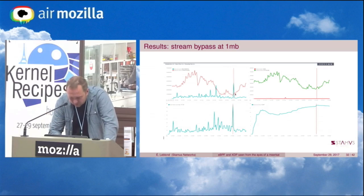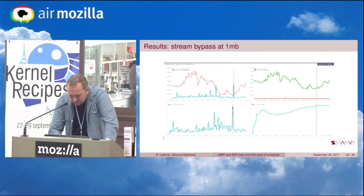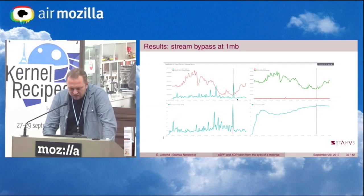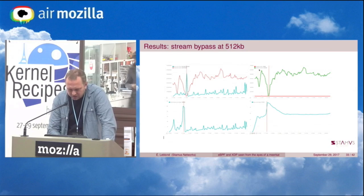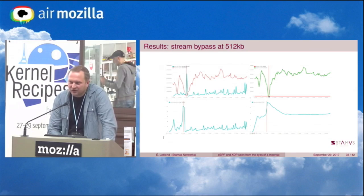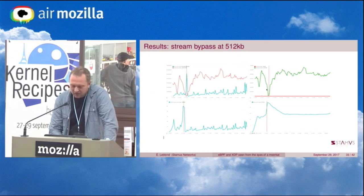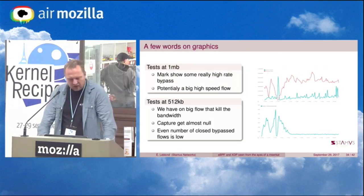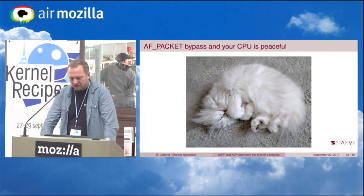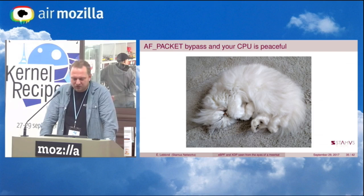Looking at the results: you can see the instant bypass percentage — there are peaks at moments when a big flow arrives and bypass occurs, so instead of getting a big amount of data, the bypass works correctly. This next graph is even more interesting: you can see the number of captured packets drops to almost zero, because at that moment there was one single big flow on the system, and by bypassing it, we managed to have almost no packets captured and no packets handled by Suricata. The bypass allows you to really stop receiving packets and lower the load on the system.